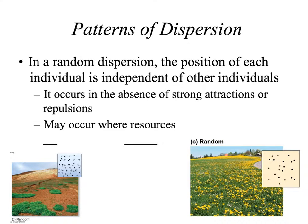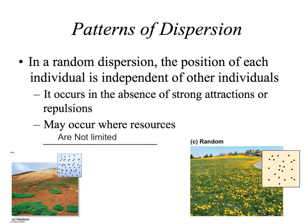The third pattern is random dispersion or random distribution. This is when the position of each individual is independent of the other individuals in the population. Random spacing occurs in the absence of strong attractions or repulsions — there is no territoriality, and resources are not limited, meaning there are plenty of resources for everyone. Wherever the seeds land, they will grow because resources are plentiful, and flowers in a field grow anywhere and are randomly spaced for the same reason.